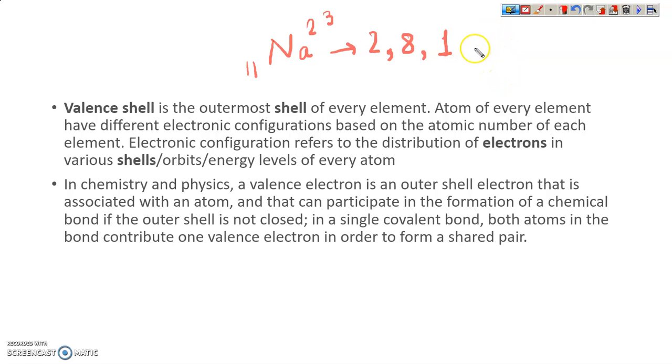So here, one electron is filled in the last shell, that is M shell. You know K, L, M shells. Therefore, M shell is the valence shell.